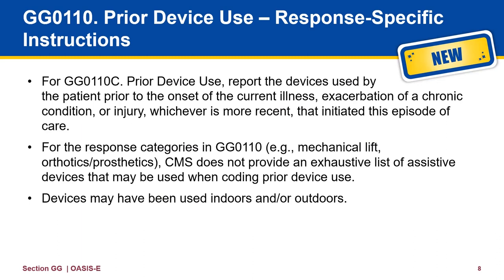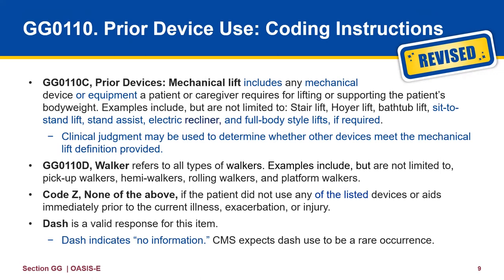Here we are again looking at what devices the patient used. These three tips will help you in coding correctly. For 0110C, report the devices used by the patient prior to the onset of the current illness, exacerbation, or injury. For the response categories in 0110 — Mechanical Lift, Orthotic, Prosthetic — CMS does not provide an exhaustive list of assistive devices. Note, the devices may have been used indoors or outdoors. Note the blue typeface changes. Mechanical Lift includes any mechanical device or equipment patient or caregiver requires for lifting or supporting the patient's body weight. Examples include, but are not limited to, stair, hoyer, bathtub, sit-to-stand lift, stand assist, electronic recliner, and full-body style lifts if required.